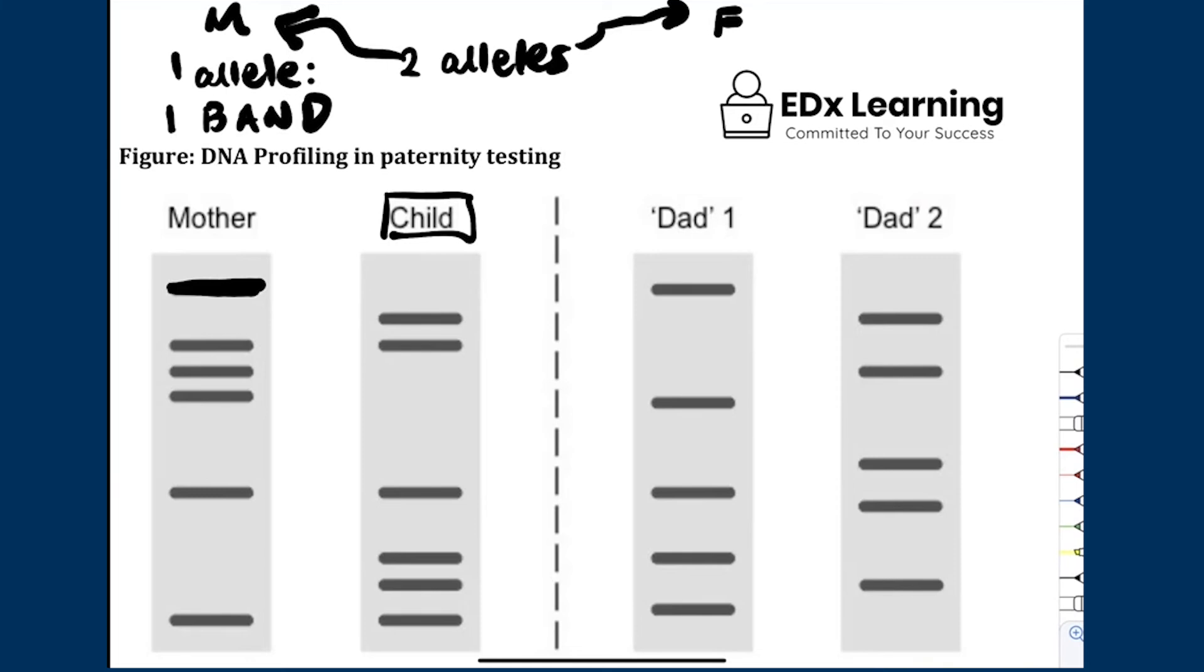But we move to this position here. The child has a band that the mother does not have. So where must that band come from? Yeah. And all we have to do is draw a horizontal line. We can see that it came from possibly the other two.